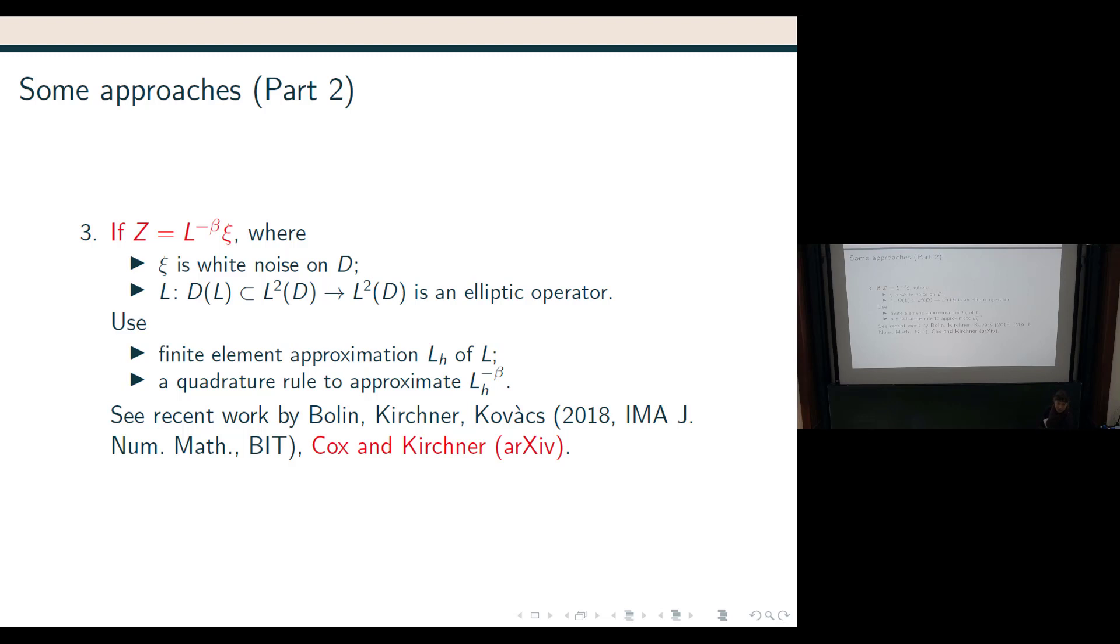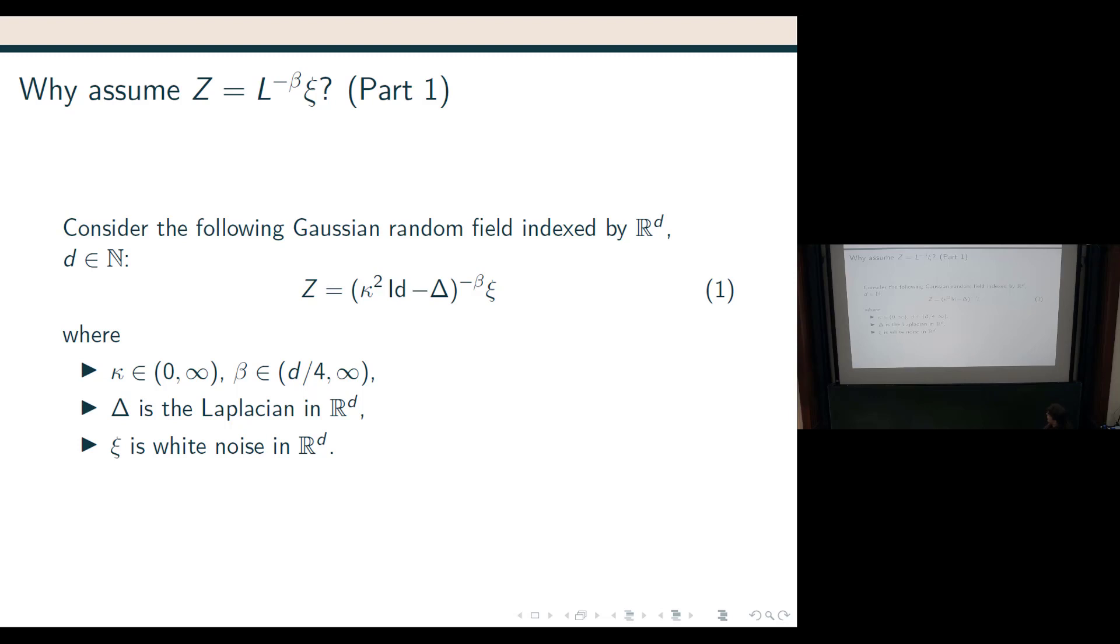So, this is the approach, and then some motivation why you would want to take this as your model for your Gaussian random field. So, now we go back a little bit in time, to be precise, to the 50s and 60s of the last century, where people already had the idea to say, okay, let's build a Gaussian random field by taking just the Laplacian in R^D here, and kappa is just a constant here. So, we look at kappa squared times the identity minus the Laplacian to the power minus beta applied to xi.